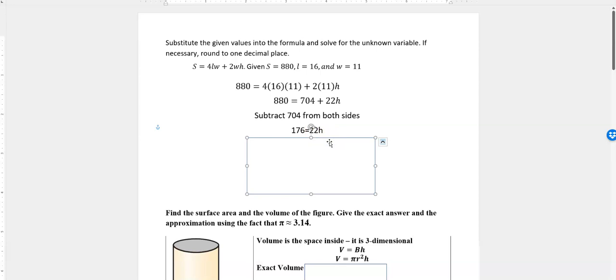To get rid of the 22, you divide both sides by 22. That looks like 176 over 22 and 22 over 22. The 22s cancel out leaving just H, and on the left side you have 8.